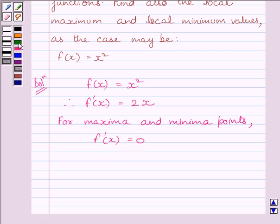So, we can write 2x is equal to 0. This implies x is equal to 0. So, we get critical point as 0.